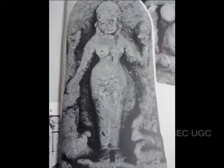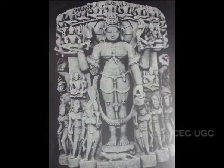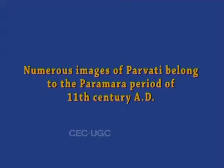She is shown seated on a Shivalinga in Lalita Asana. The linga has a Brahmasutra at the top. This sculpture may be assigned to circa 9th or 10th century. Some images of Parvati of the 10th century have been brought to notice from Bhopal, Sahadol, Moe, Ashapuri, Mandasar and other sites in Madhya Pradesh, preserved in museums. Numerous images of Parvati belong to the Paramara period of the 11th century AD.